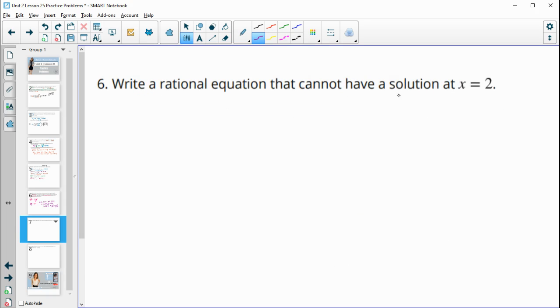Number 6, what's a rational equation that cannot have a solution at X equals 2? So this means that the denominator, so a rational equation has fractions, right? And so when we write this equation, that means that the denominator cannot equal 0 when X equals 2. So the factor that goes with X equals 2, we bring that X back over, and that means that X minus 2 can't equal 0. So you just have to have X minus 2 as a factor down here.